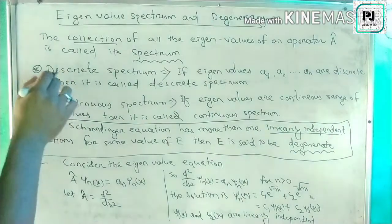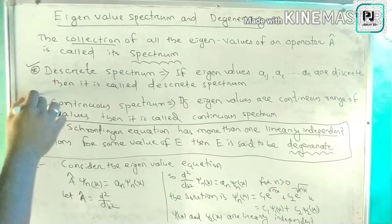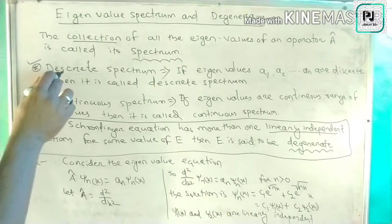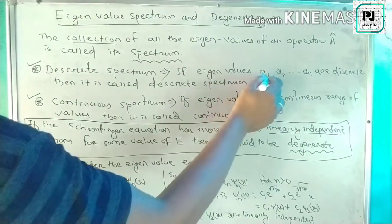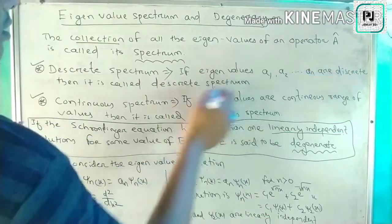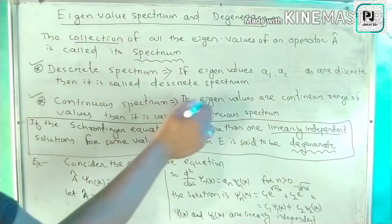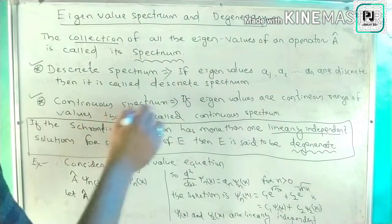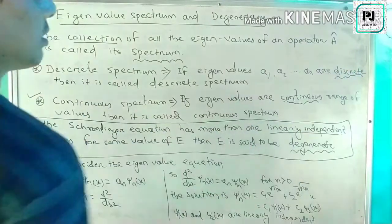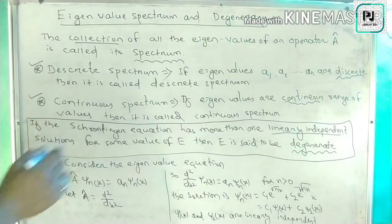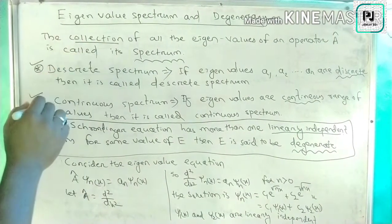There are basically two types of the spectrum. One is a discrete spectrum and the other is a continuous spectrum. If the eigenvalues are discrete — that means A1, A2, different values are taken — that is called the discrete spectrum. If the eigenvalues form a continuous range of values, then it is called the continuous spectrum.